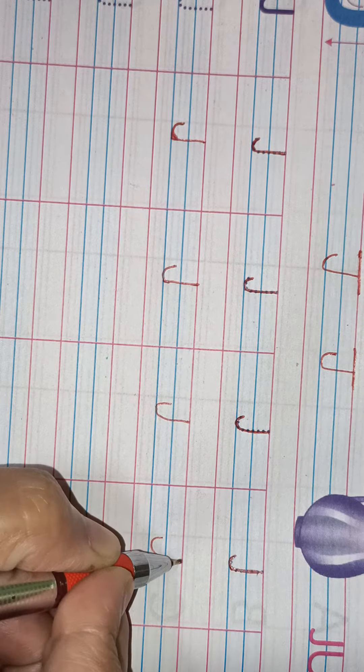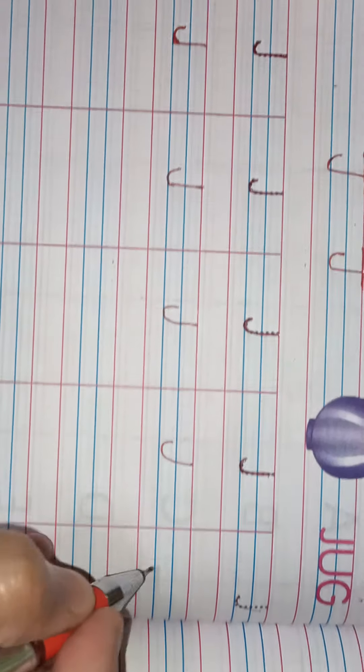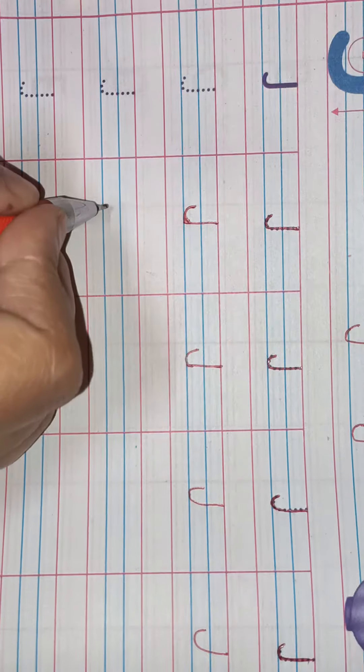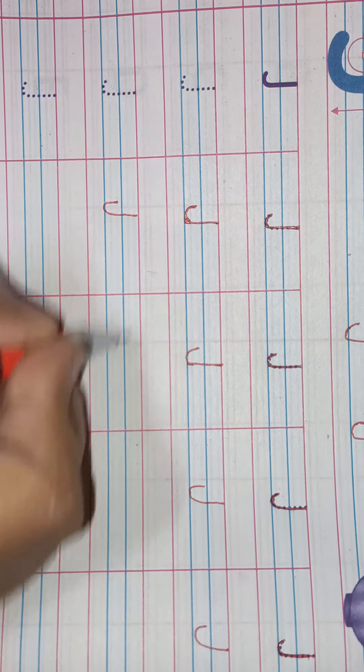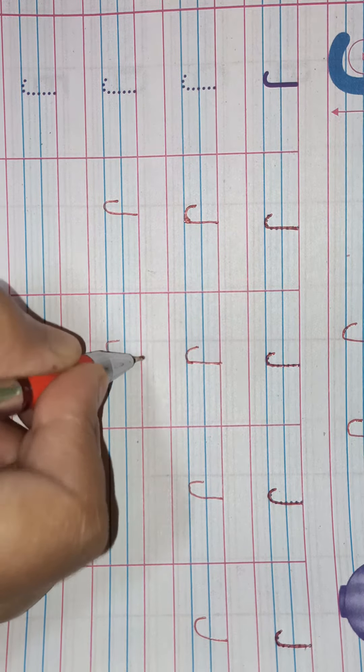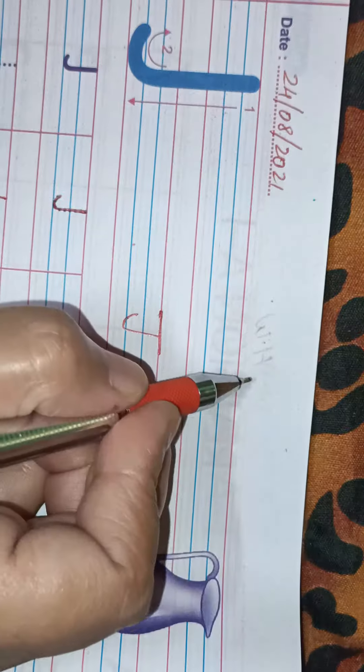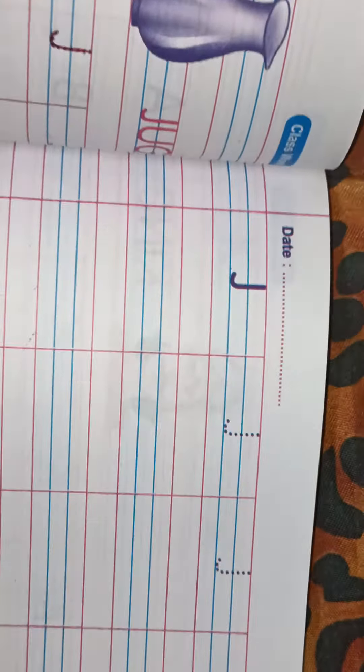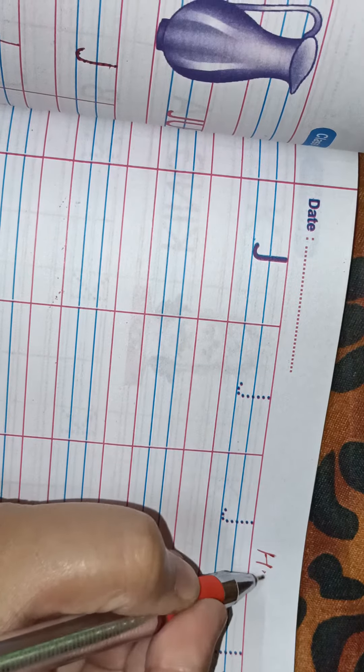This is J, this is J, capital J in English alphabet, capital. Okay, so is page mein upar aap log write karenge CW